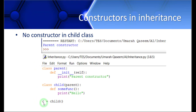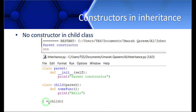We know that whenever an object is created, the constructor of that class is called. But here, the object was created of the child class, not the parent class — yet the parent class constructor was called. That's because there is no constructor in the child class. When you've inherited a class and the child class has no constructor, the constructor of the parent class is called. When the object is created, it looks for a constructor in the child class, and when it doesn't find one, the call goes to the parent.